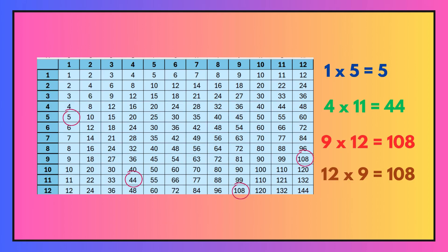Here are your answers. So one times five is five. Four times eleven is forty-four and you can see from nine times twelve and twelve times nine. The answers are the same. They're both a hundred and eight.